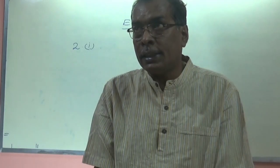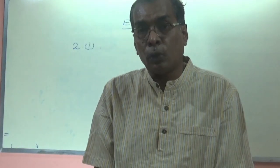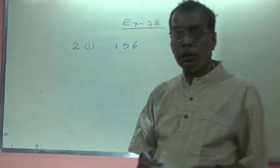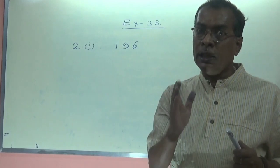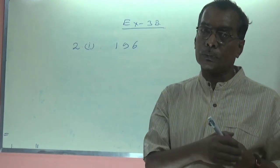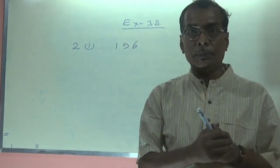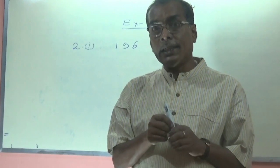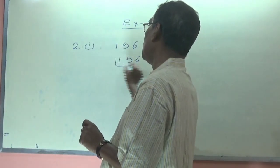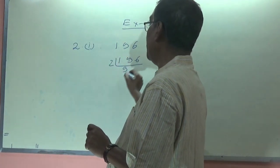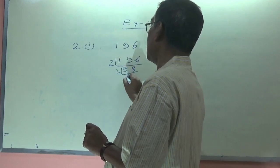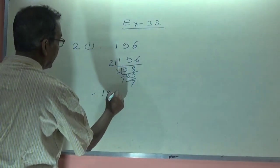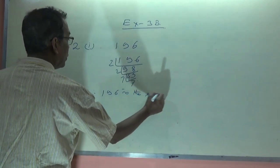Now, a number is given and you have to say whether it is the square of an even number or not. Question number 2, first one: 196. Since 196 is an even number, if it is a perfect square, it will be the square of an even number. We need to verify: 196 = 14², so 196 is a perfect square.